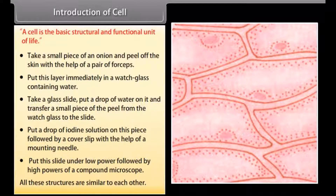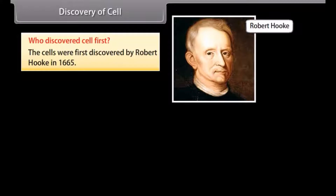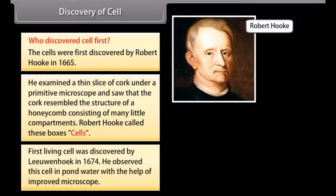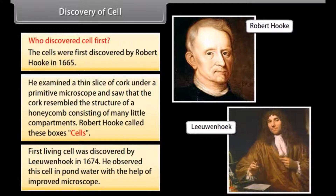Discovery of cell. The cells were first discovered by Robert Hooke in 1665. He examined a thin slice of cork under a primitive microscope and saw that it resembled the structure of a honeycomb consisting of many little compartments. Robert Hooke called these boxes cells. The first living cell was discovered by Leeuwenhoek in 1674. He observed this cell in pond water with the help of an improved microscope.